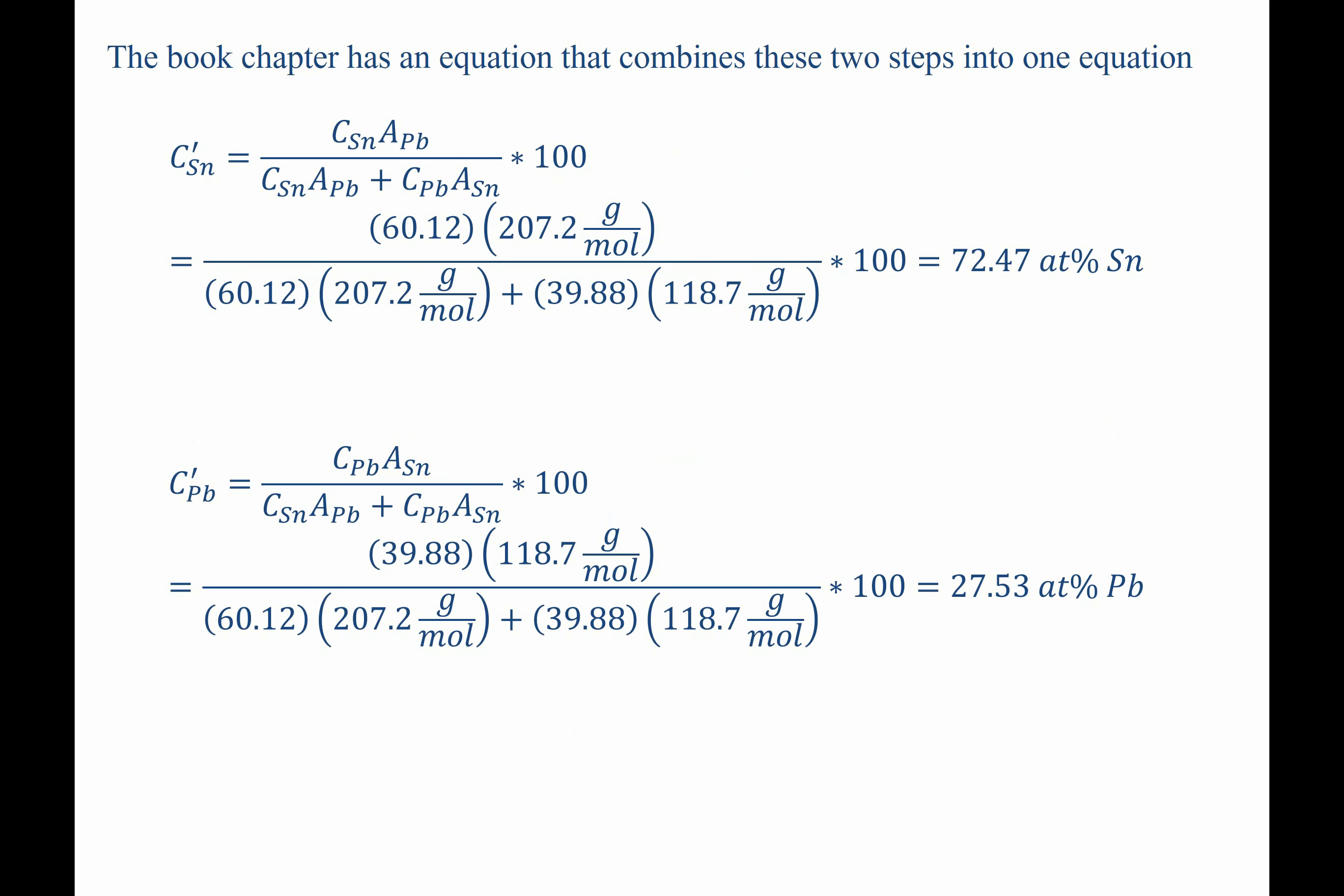Now that we know those values, we can go ahead and plug them in. Then c sub sn, we're going to use 60.12, c sub pb, we're going to use 39.88. Plugging this in, we achieve the same answer that we did by doing those two parts separately, 72.47 atomic percent tin, and similarly for lead, 27.53 atomic percent lead. Whether you do these steps separately, or whether you use the equation in the book, you get the exact same answer.